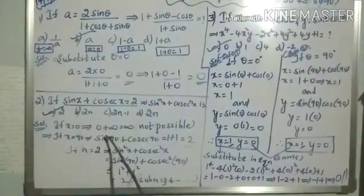In the other case, if I substitute θ = 90 degrees: x = sin 90 + cos 90 = 1 + 0 = 1. Here also we get x = 1. For y = sin 90 × cos 90 = 1 × 0 = 0. Again y = 0. In both cases, x = 1 and y = 0 consistently.